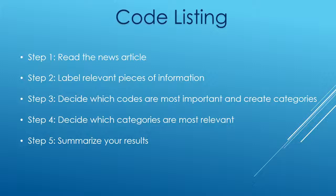In step three, I decided which codes were most important and created categories. I was looking at pieces of text and words, and I created some categories to see what came up and what was most common. In step four, I decided which categories were most relevant. When I was doing this listing, I created a lot of categories and groups, but then I narrowed it down to about five categories. And in step five, I basically summarized the result of the whole analysis.